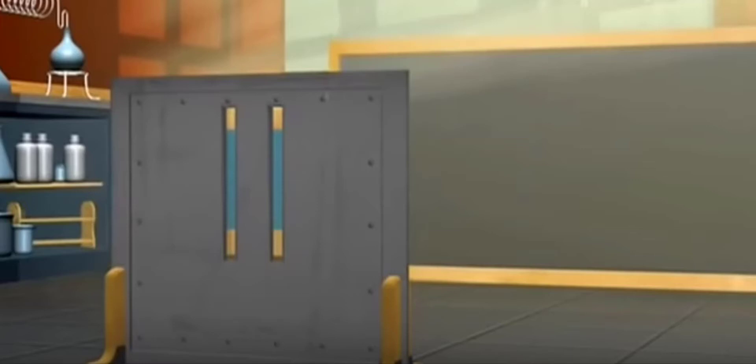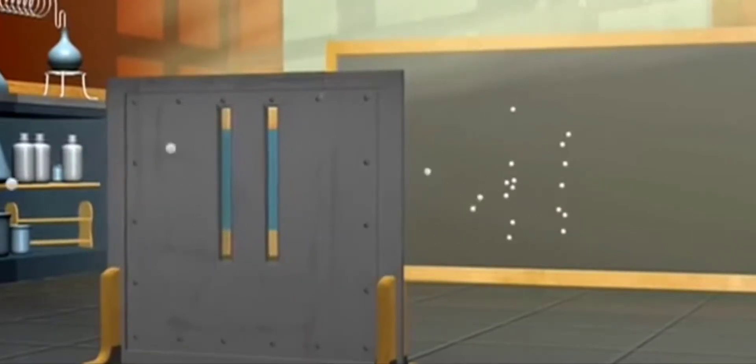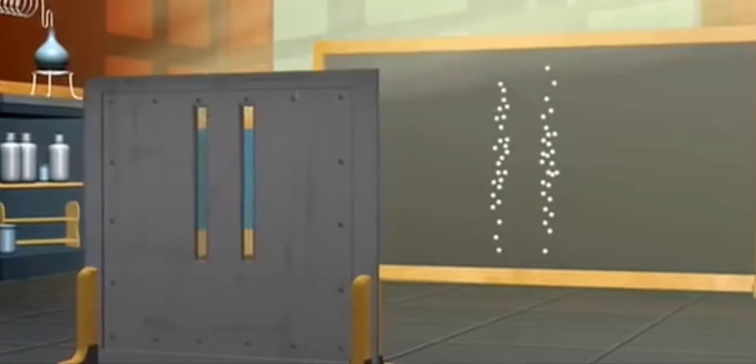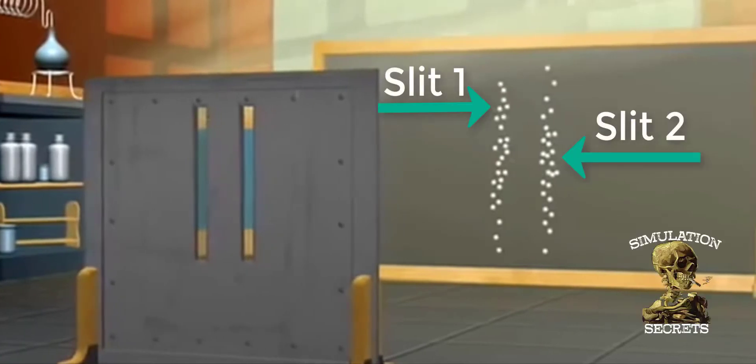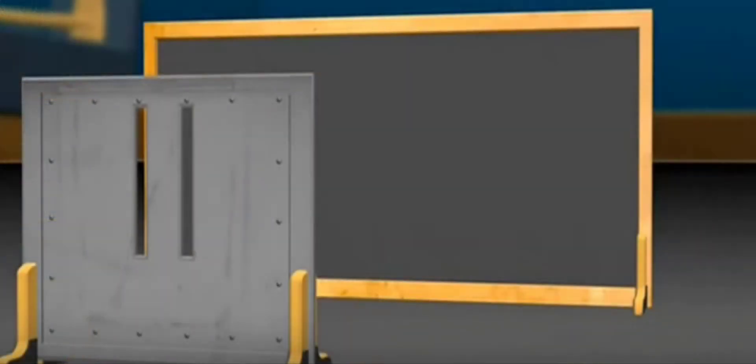Now if we give the front wall two slits or double slit, this is what we should see. The marble should hit the wall directly behind one of the two slits that it goes through. The only problem is that doesn't happen.